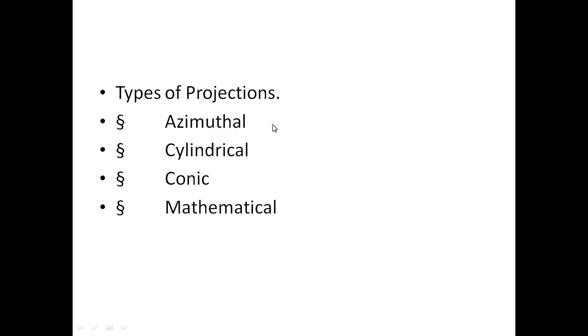There are four different types of projections: azimuthal, cylindrical, conic, and mathematical. Generally we use cylindrical and conic projection systems more often. In the next lectures I will use the cylindrical projection system, so I am going to give more emphasis on the cylindrical coordinate system here.